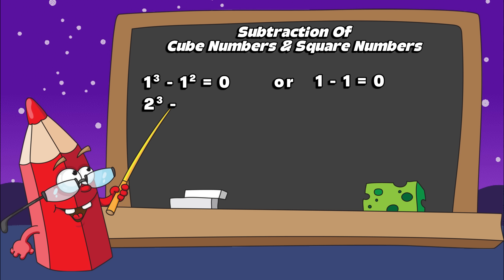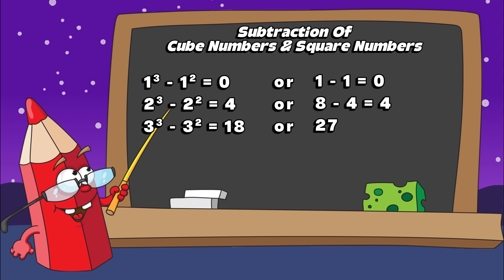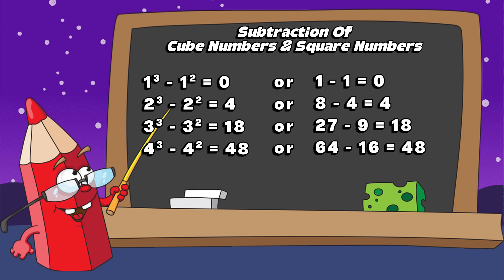Two cubed minus two squared equals four. Or eight minus four equals four. Three cubed minus three squared equals eighteen. Or twenty-seven minus nine equals eighteen. Four cubed minus four squared equals forty-eight. Or sixty-four minus sixteen equals forty-eight. Five cubed minus five squared equals one hundred. Or one hundred and twenty-five minus twenty-five equals one hundred.